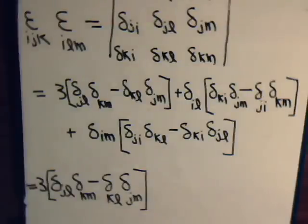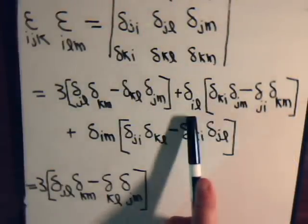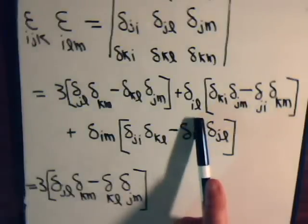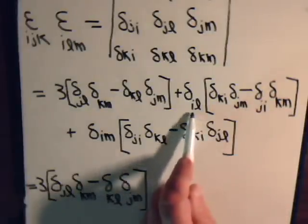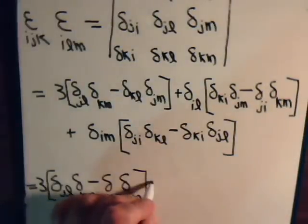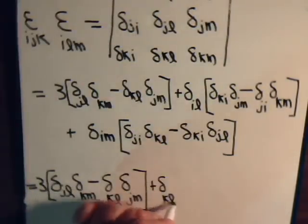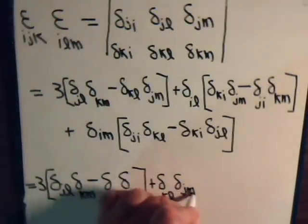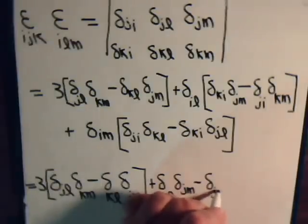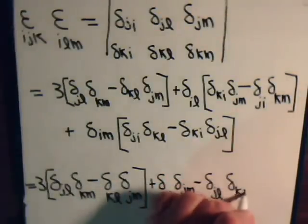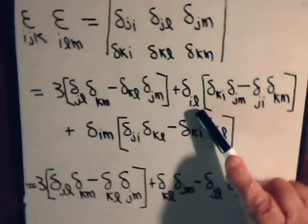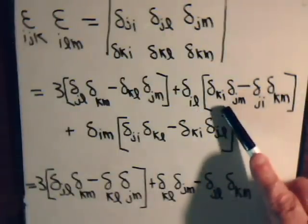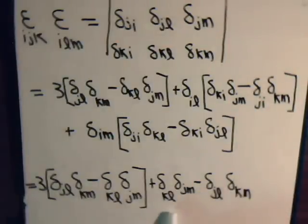Now let's look at these terms. Here we have this being multiplied by delta_IL, but this is 0 unless I is the same thing as L — then it equals 1. So this I is going to be an L, and that I is going to be an L. That's going to be 1 when I equals L. So this will be plus delta_KL * delta_JM minus delta_JL * delta_KM.